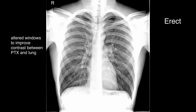This is the same patient as in the last slide. The windows have been altered to try and increase the contrast resolution between the lung and the pneumothorax. Again, you can see the lung edge become visible, and then it fades as it becomes obscured by the rib itself. So, altering the windows can improve the contrast resolution between the pneumothorax and the lung.